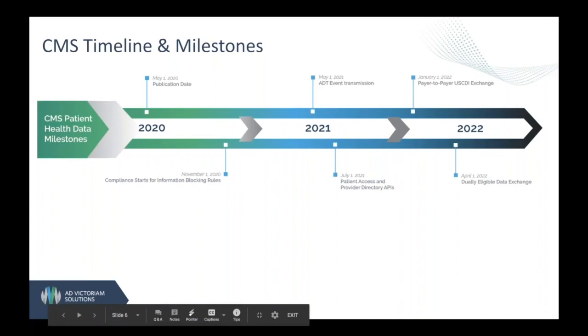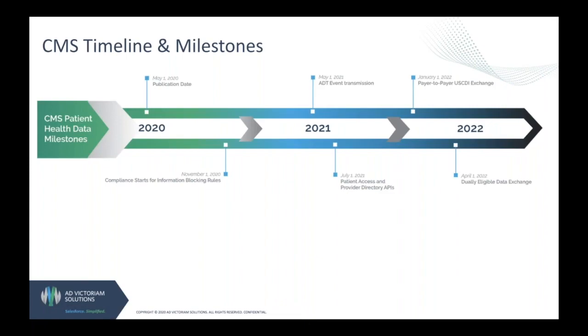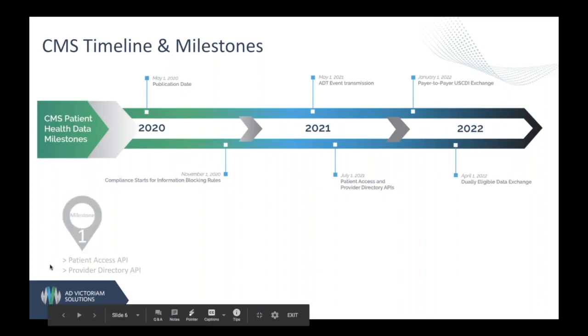In November, the CMS will start publicly reporting any organizations that are considered to be blocking information.